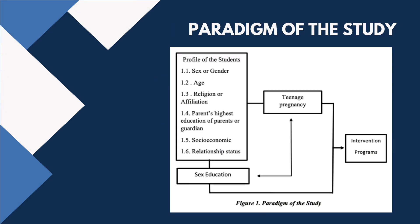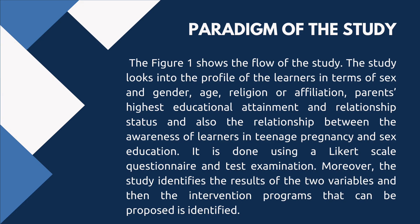Figure one shows the flow of the study. The study looks into the profile of the learners in terms of sex and gender, age, religion or affiliation, parents' highest educational attainment, and relationship status, as well as the relationship between the awareness of learners in teenage pregnancy and sex education. This is done using a Likert scale questionnaire and test examination. The study also identifies results of the two variables and proposes intervention programs.